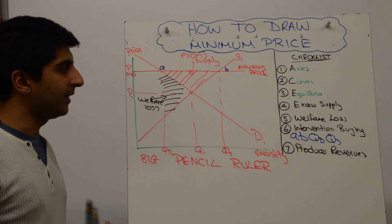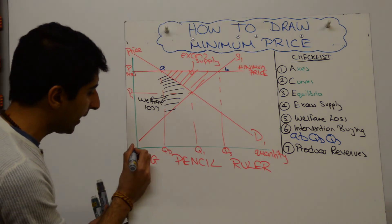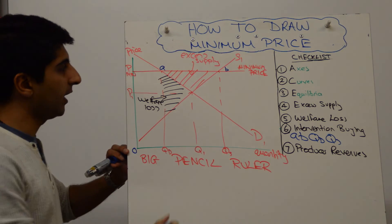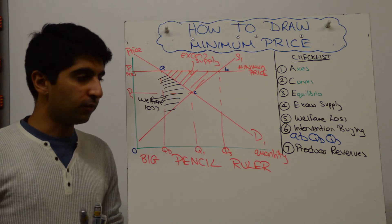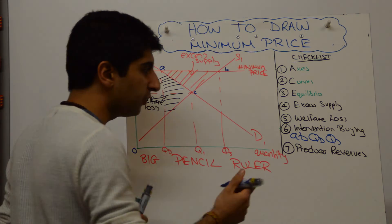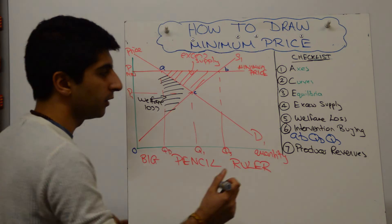We also want to finally show is the impact on producer revenue. So for that, you want to label 0 over here, and you want to maybe label this point C, and you'll get your producer revenue. So you can say, look, initial producer revenue was P1CQ10.